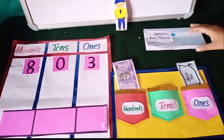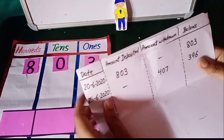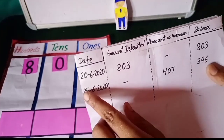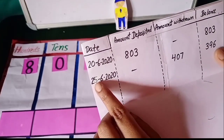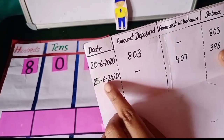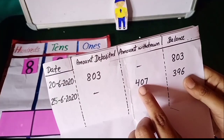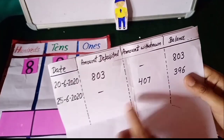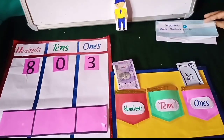Now let's see how many rupees Harman withdrew from his bank account. On 25th June 2020, 407 rupees were withdrawn.